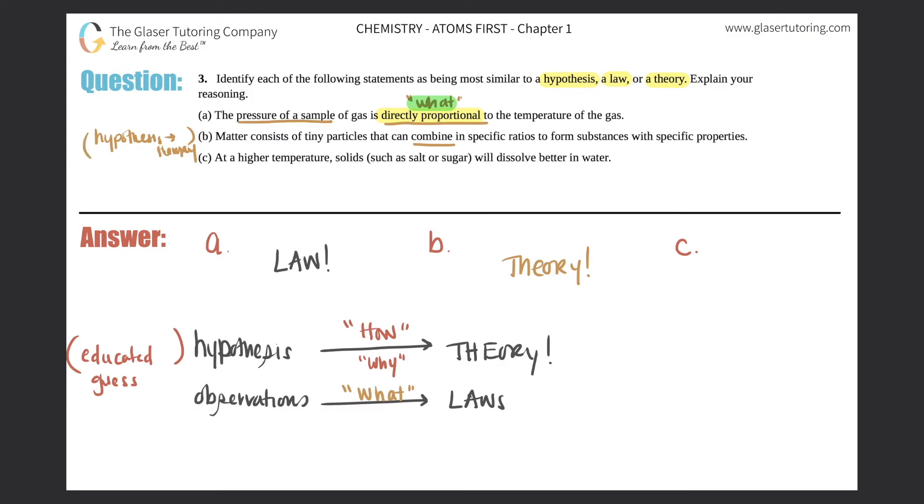Okay, last one. At a higher temperature, solids such as salt or sugar will dissolve better in water. Hmm, this one sounds like an educated guess. At higher temperature, solids will dissolve better in water. Well, could, could not be. It's an educated guess, so therefore this is a hypothesis. Hypothesis. But over time, if the question keeps getting answered in the same exact way, it will turn into a theory. So just key in on the specific wordings of the questions and just know your differences between hypothesis, theories, and laws.